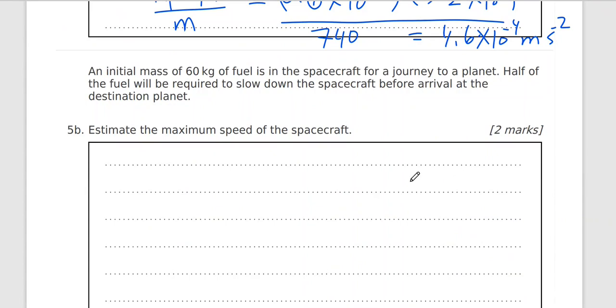Okay. Now an initial mass of 60 kilogram of fuel is in the spacecraft for a journey to a planet. Half of the fuel will be required to slow down the spacecraft before arrival at the destination planet. Estimate the speed of the spacecraft. Here we can use the conservation of momentum. Initial momentum will equal final momentum.